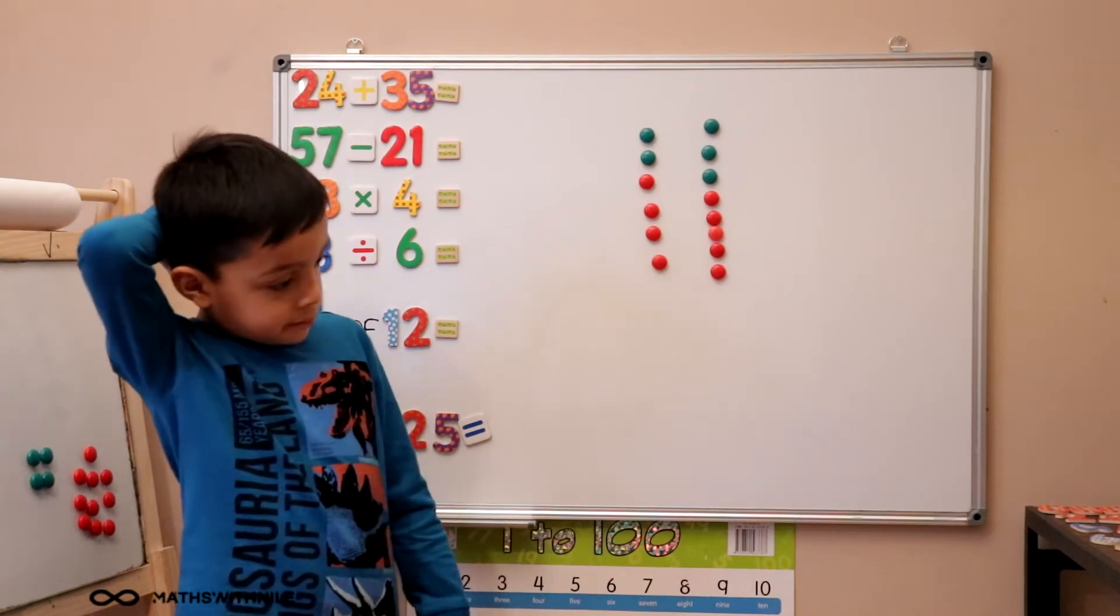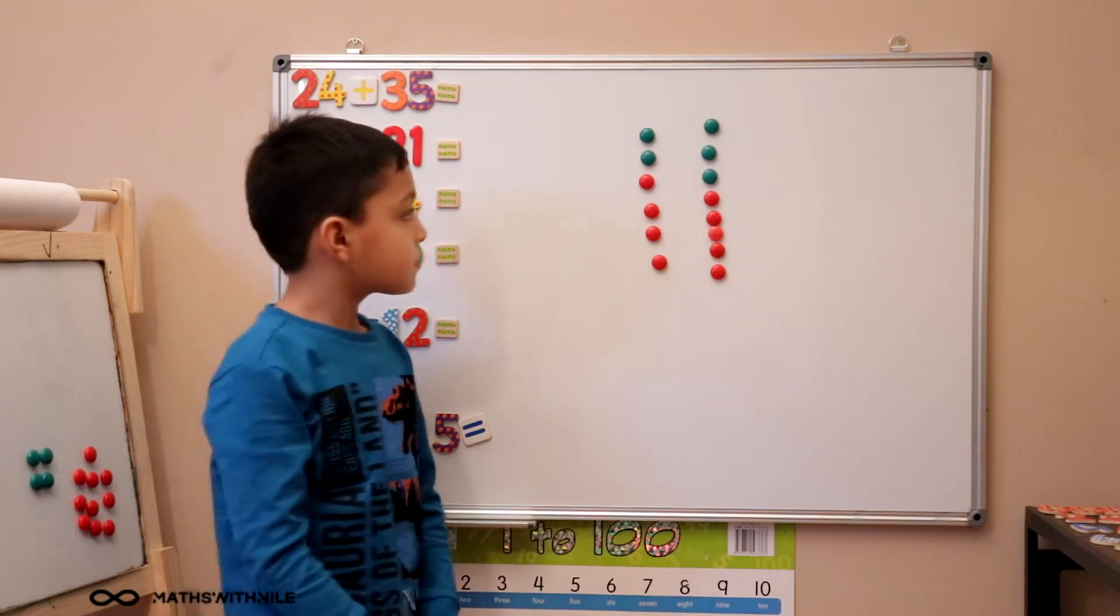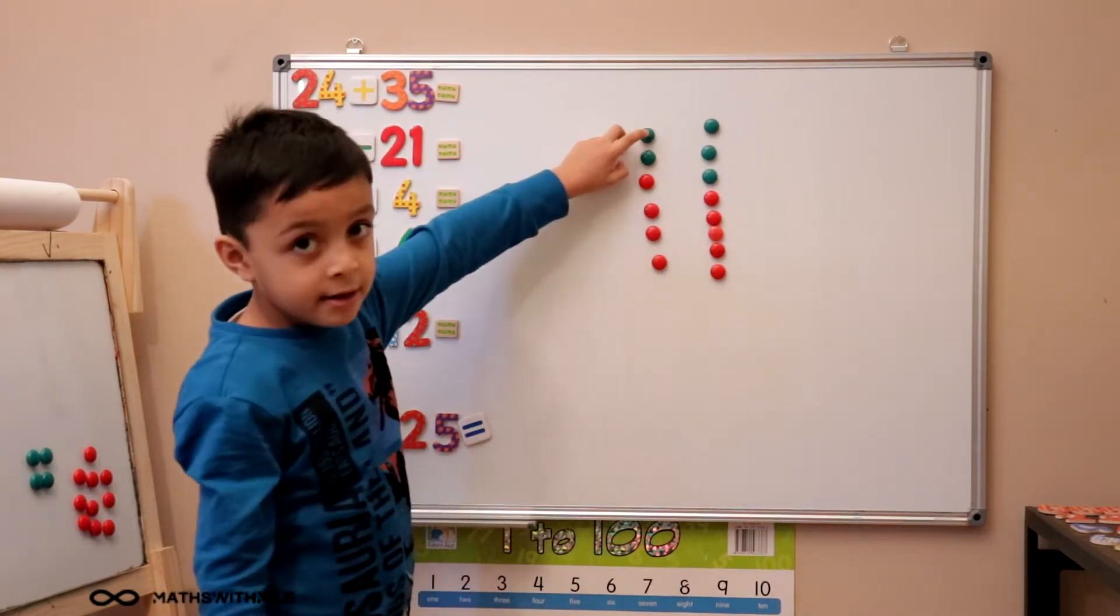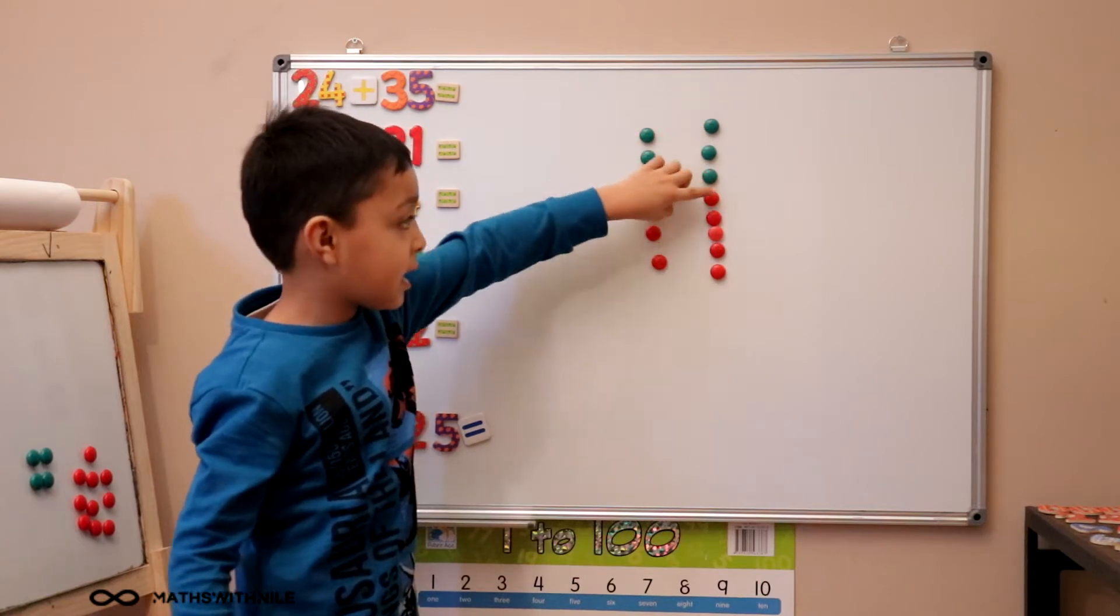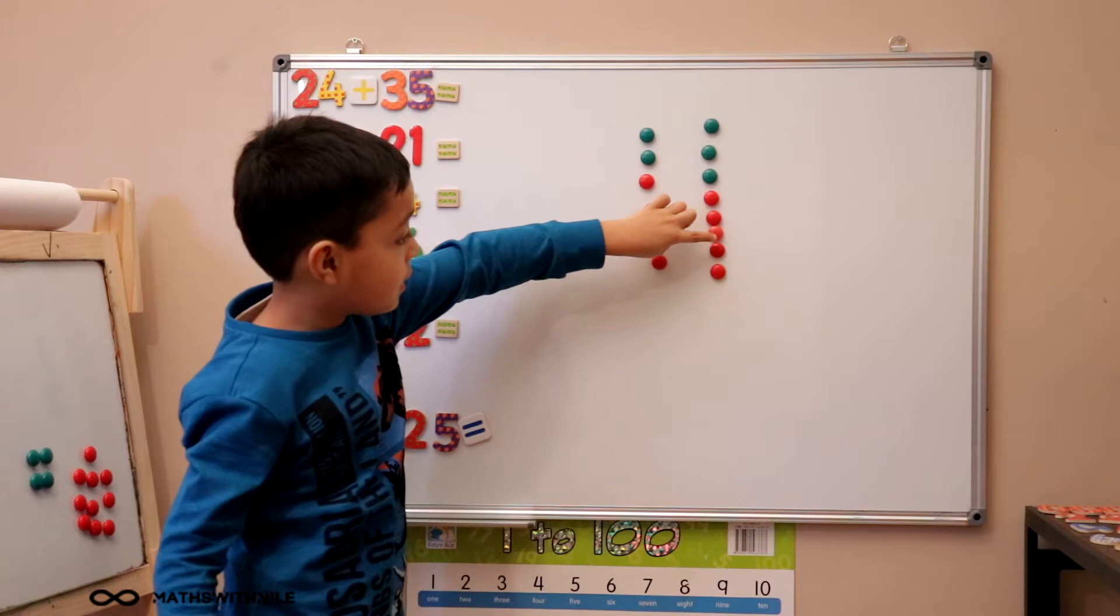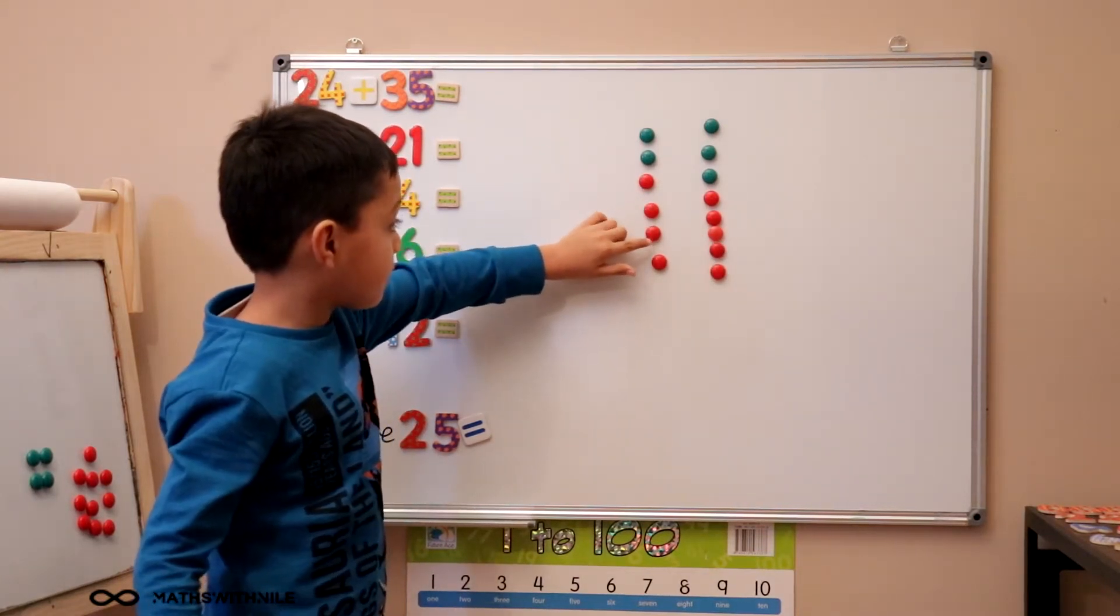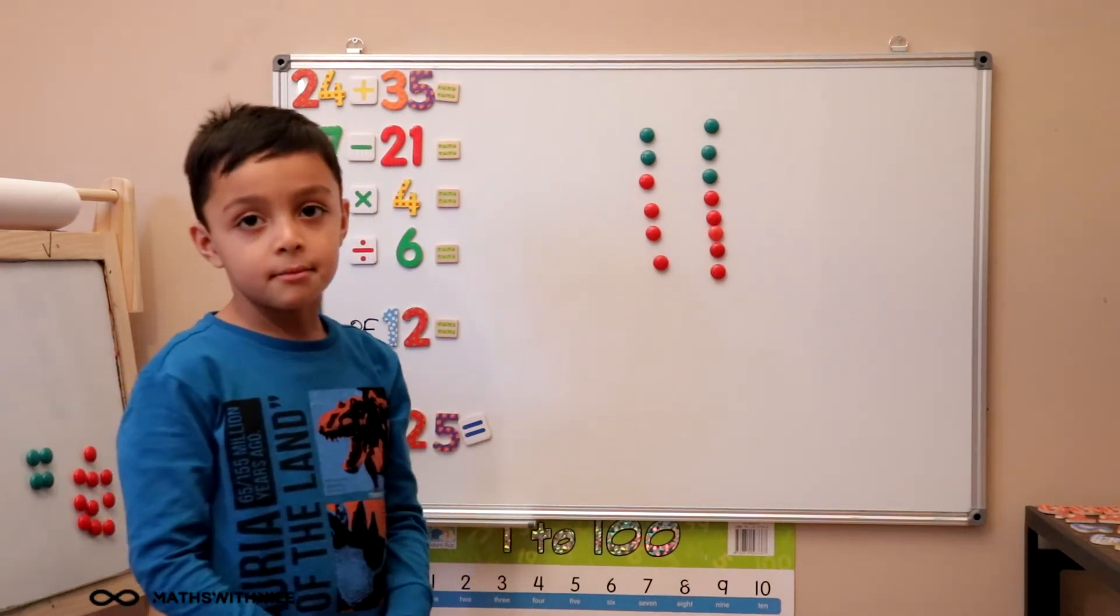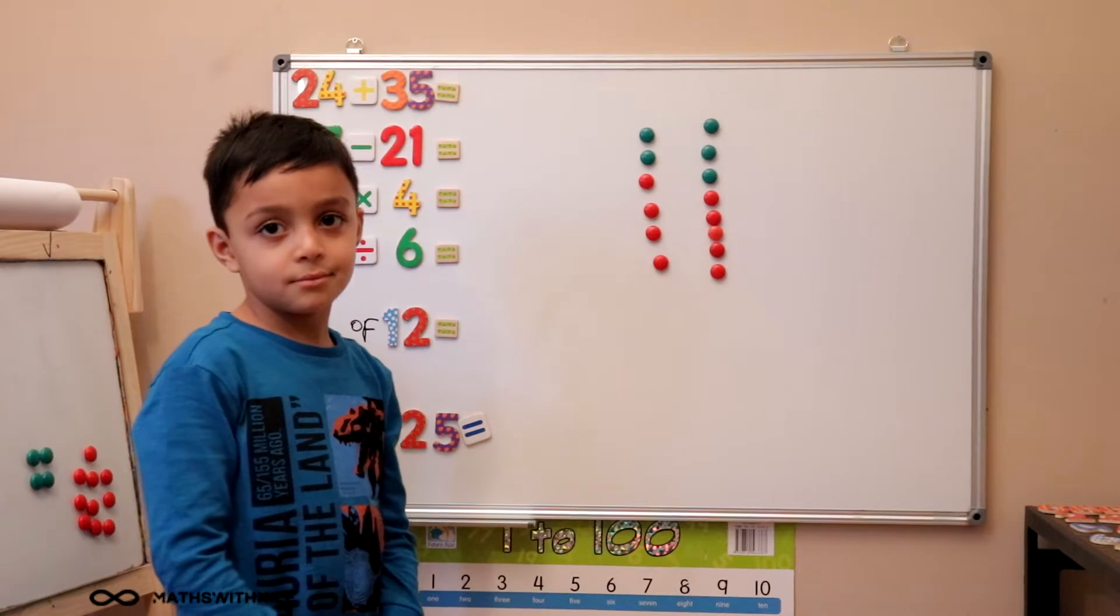So you've got 24 plus 35. Can you quickly show us how you would count this up? 10, 20, 30, 40, 50, 51, 52, 53, 54, 55, 56, 57, 58, 59. Very good. So you put all the tens together first because that would have been easier. So the answer is 59.